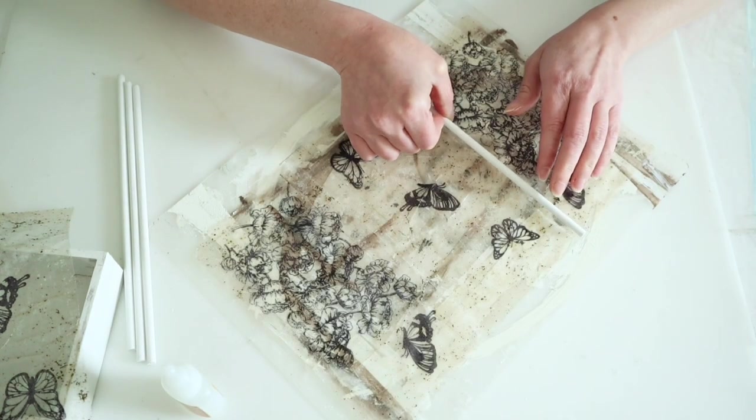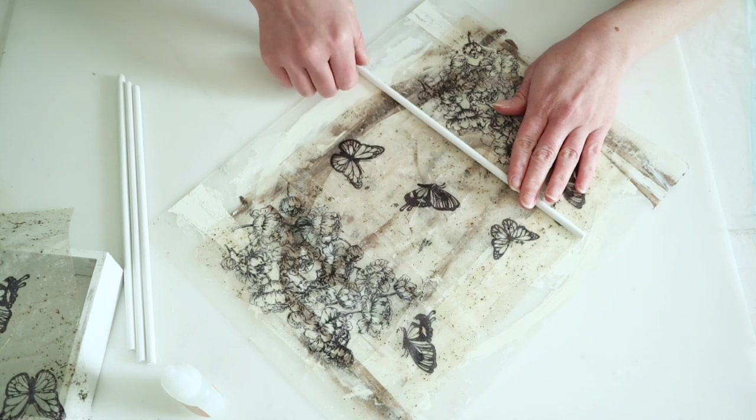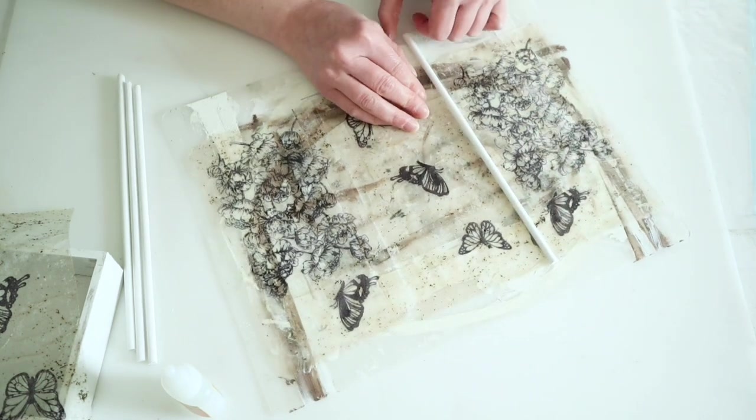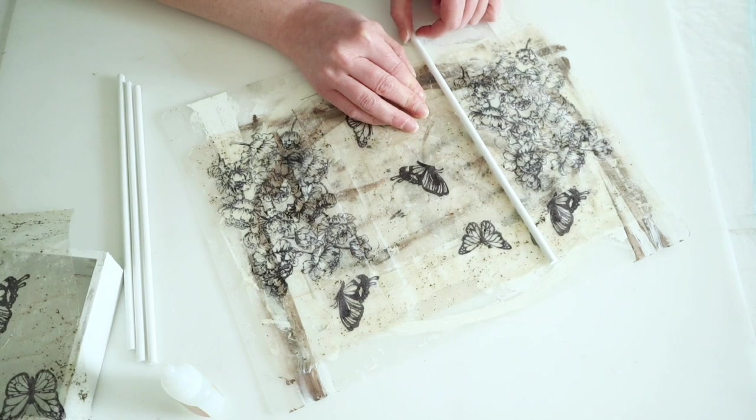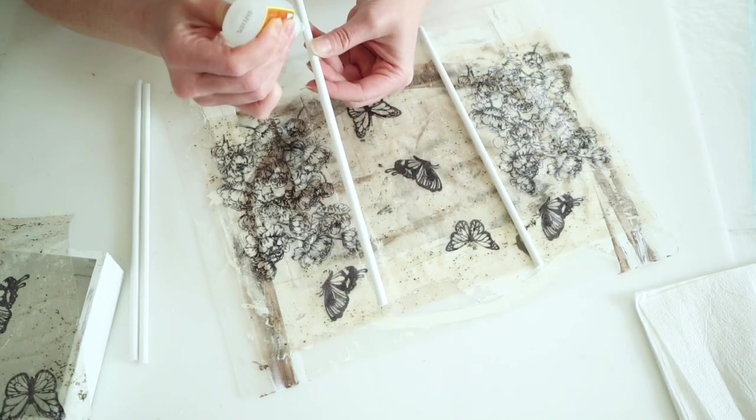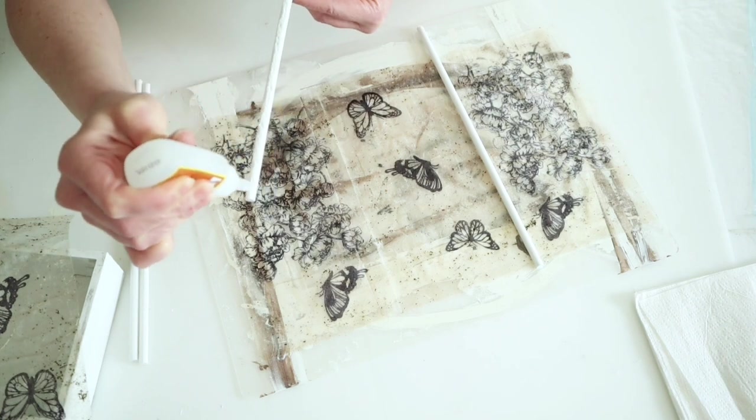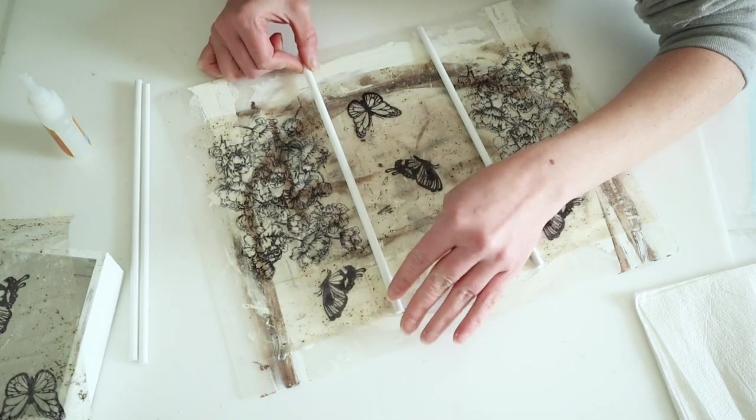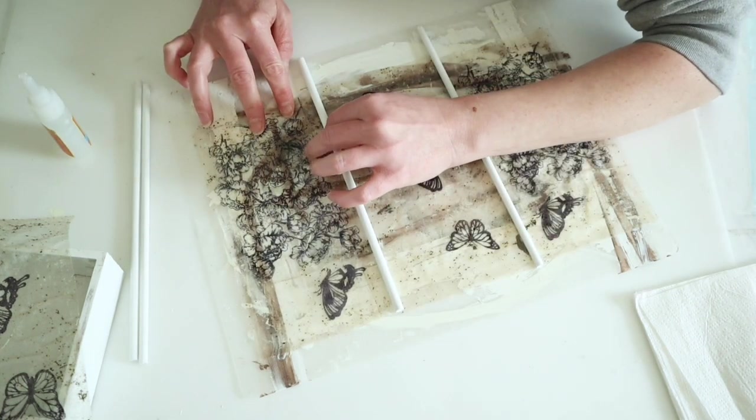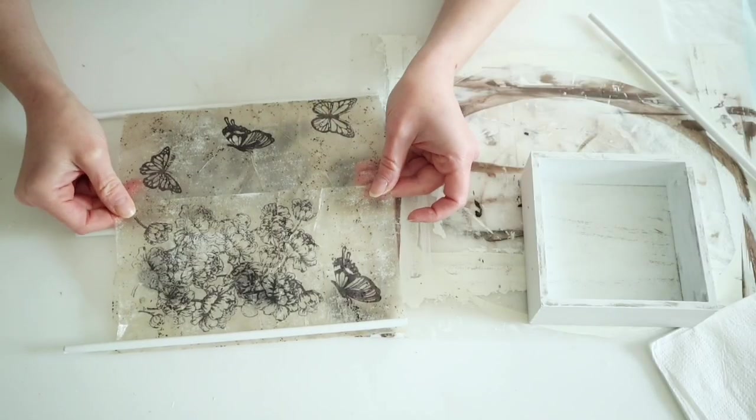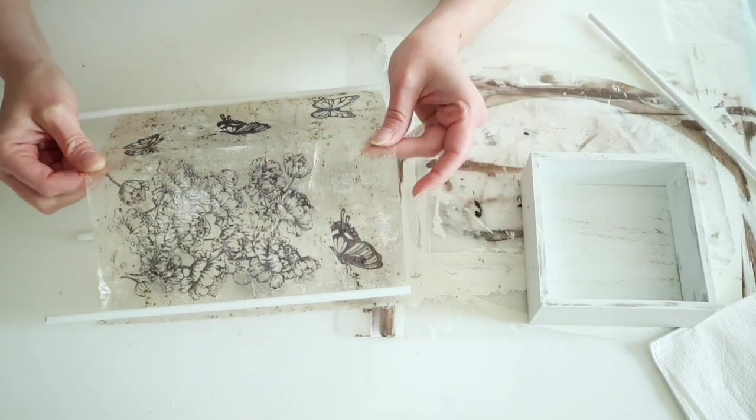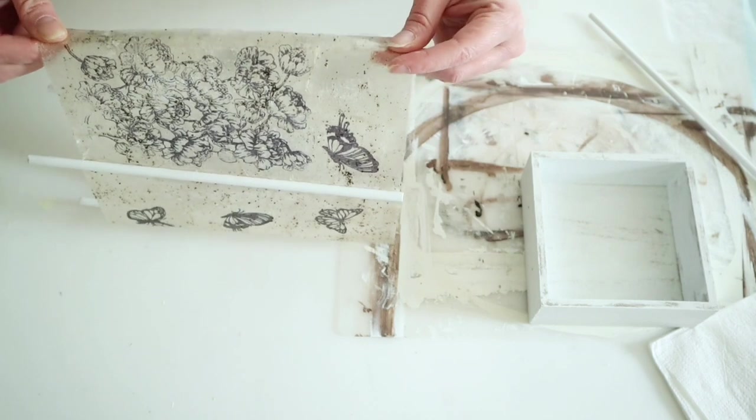I'm taking those dowel rods, using some gel super glue, and gluing one dowel rod to two sheets, and then one dowel rod to two sheets. These dowel rods are kind of connecting those sheets.